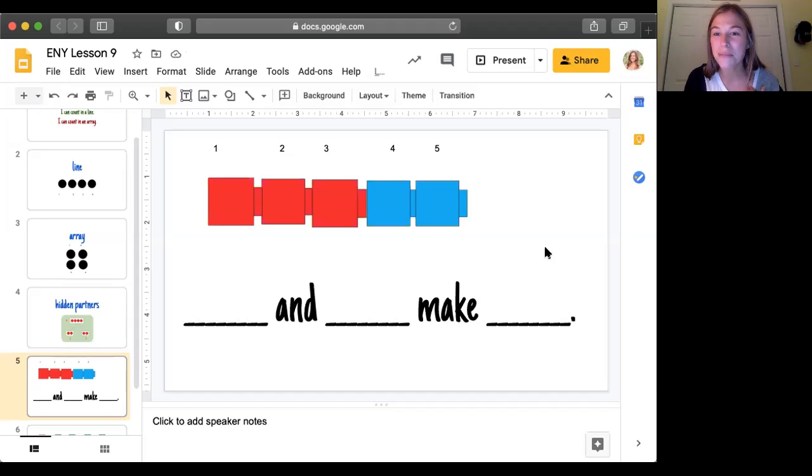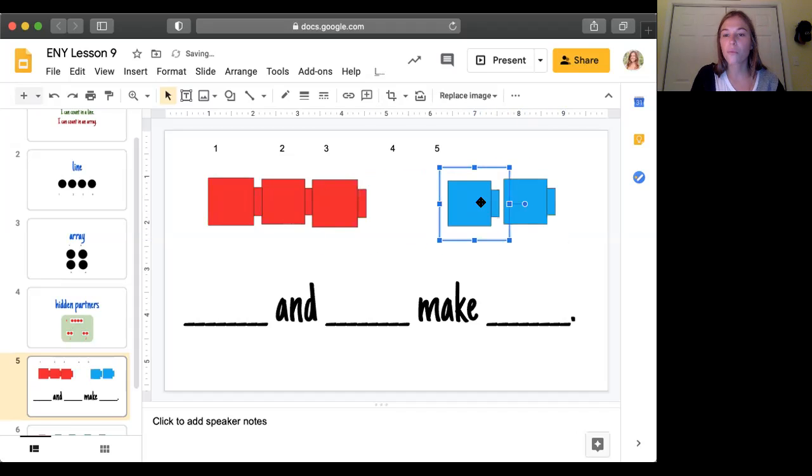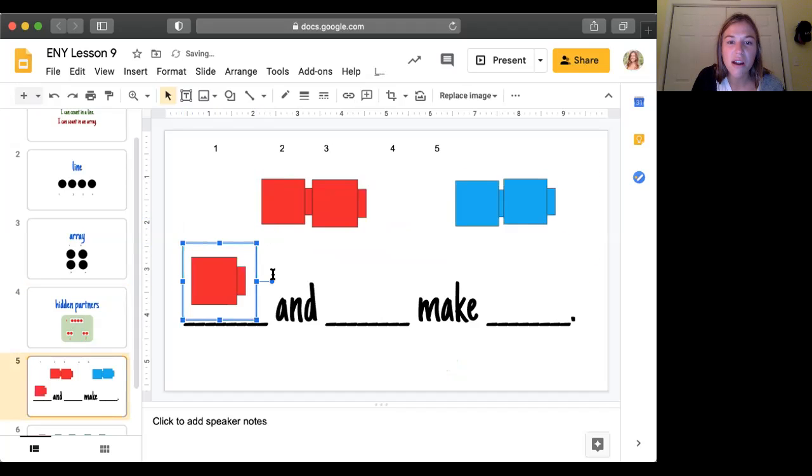But she is now going to break her tower apart into a tower of two and three. So we now have three red cubes and two blue cubes. So I'm going to move my cubes here. So we know that...